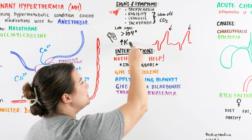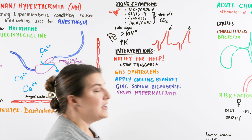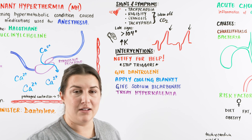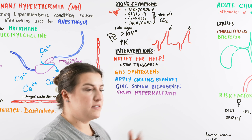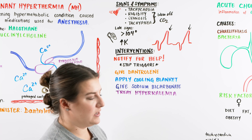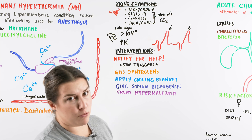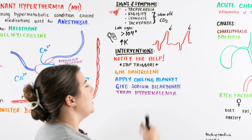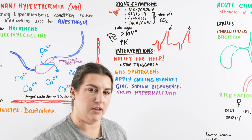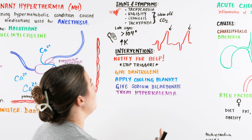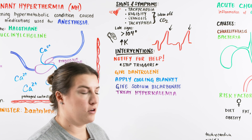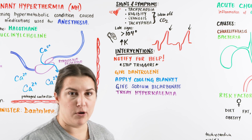On the NCLEX, if the question describes a patient who became rigid during surgery, had a rising temperature, elevated heart rate, and lab work showing high potassium — that should make you think malignant hyperthermia. From there, we start thinking about our interventions: what can we do as a nurse and as a team member in this surgical or procedural setting?